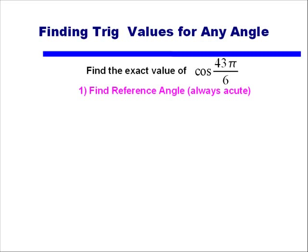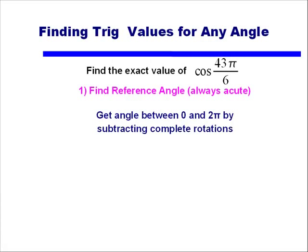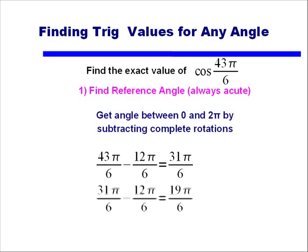Here's one that behaves a little bit better: cosine of 43π/6. We're going to find the reference angle, but like we did with degrees, we want this value to be between 0 and 2π. So we'll take out complete rotations from 43π/6. After subtracting one rotation (2π = 12π/6) we get 31π/6. That's still more than 2π, so we subtract another rotation to get 19π/6. Subtracting once more gives us 7π/6.